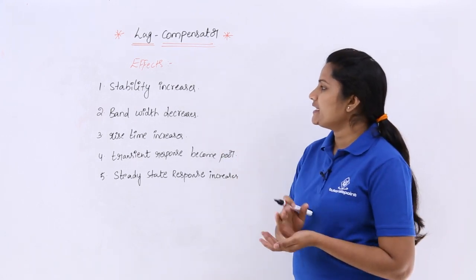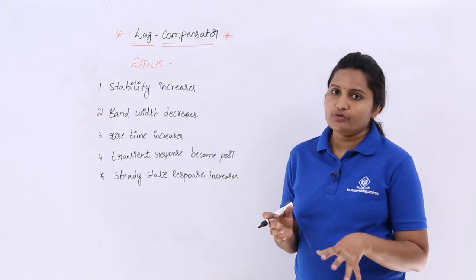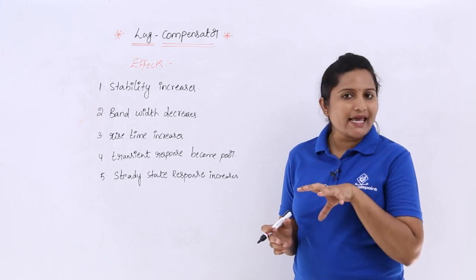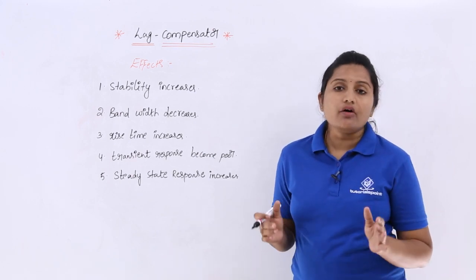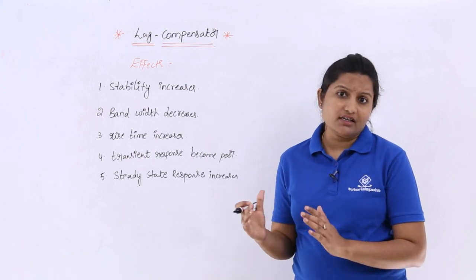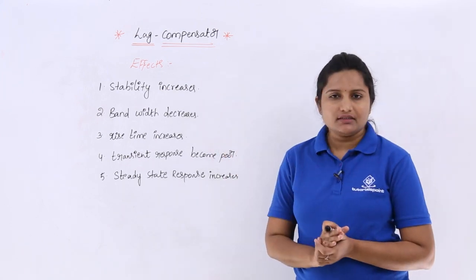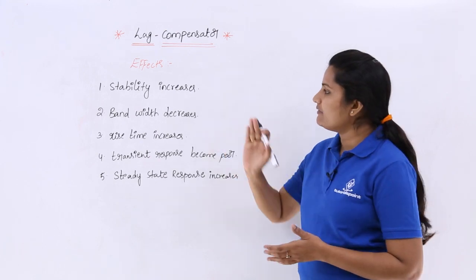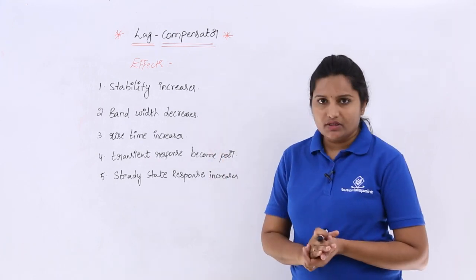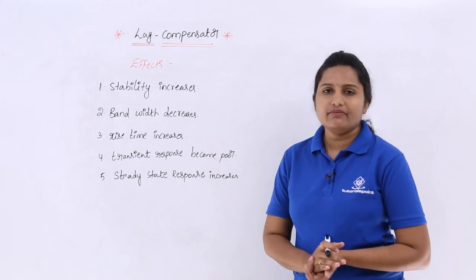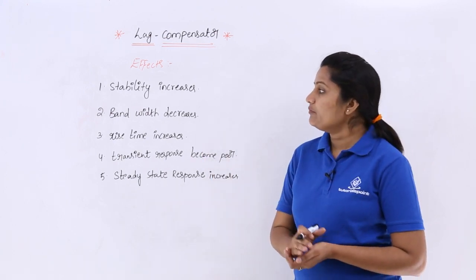If you are using a lag compensator in a control system, it will stabilize the system — that means stability will increase. Additionally, bandwidth will decrease, rise time will increase, and the transient response will become poor.